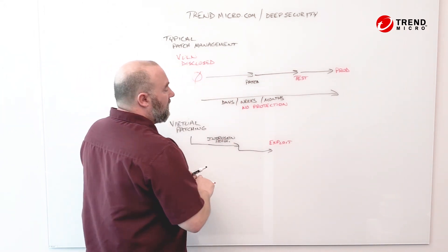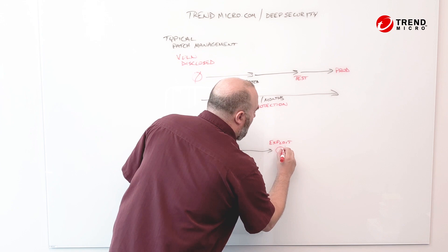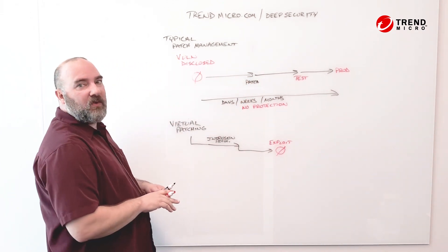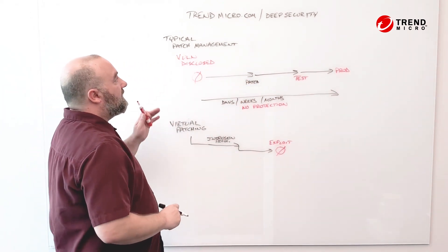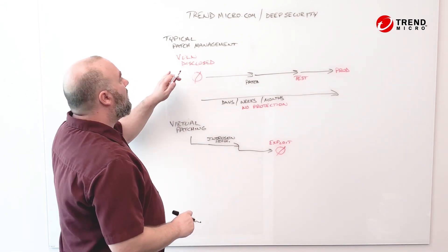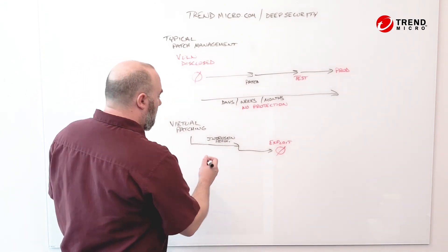If we see that this is occurring, we can actually drop the traffic and prevent the exploit from occurring. Now typically we have patches available when the vulnerability is disclosed.